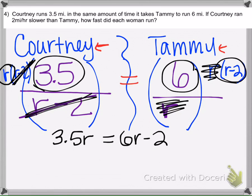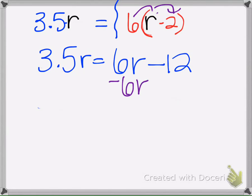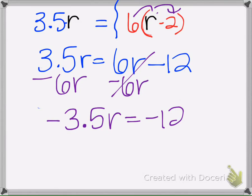So now we're going to go ahead and solve that equation. So we're going to distribute. 6 times R is 6R, 6 times negative 2 is negative 12. And then we're going to subtract 6R to put all the R's on the left side. And divide by negative 3.5.